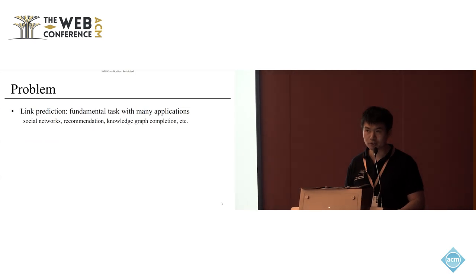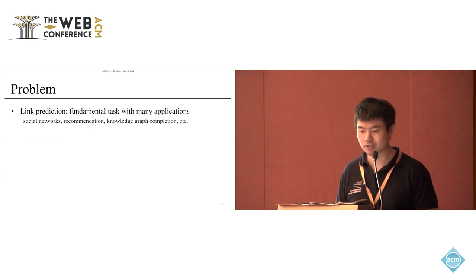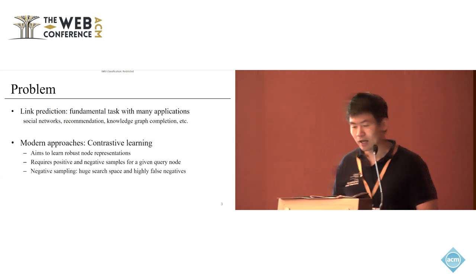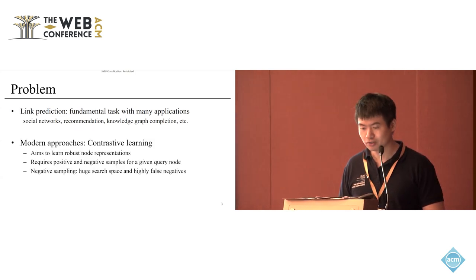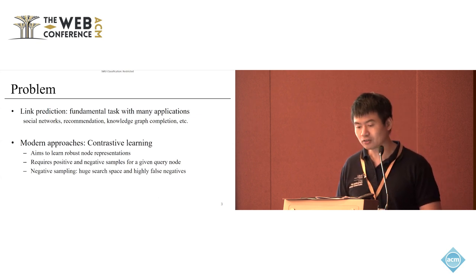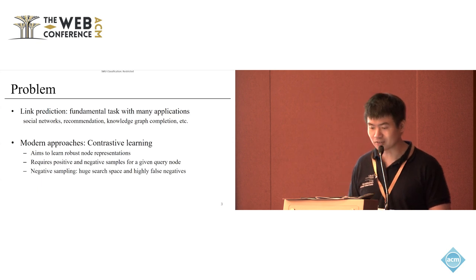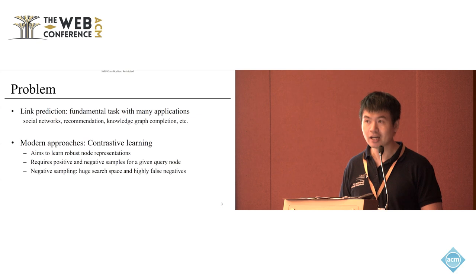The problem we are dealing with is link prediction, which is a fundamental task with many applications in social networks, recommendation, and so on. Many modern approaches utilize contrastive learning, which aims to learn node representations through using positive and negative examples. The issue with negative sampling is that there is a very huge search space.